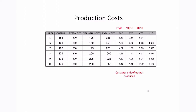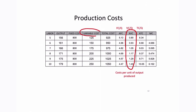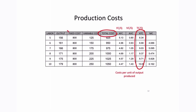Let's do these calculations. Average fixed cost is fixed cost divided by output. Average variable cost is variable cost divided by output. Average total cost is total cost divided by output. And marginal cost is the change in total cost divided by the change in output.